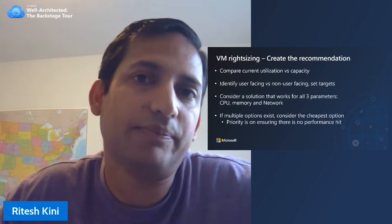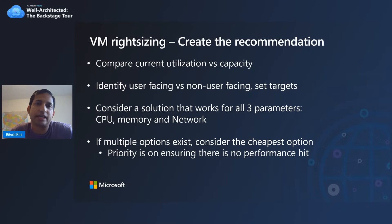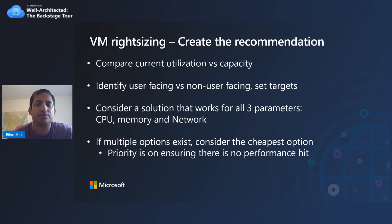Let's look at exactly what happens to derive a recommendation. We first compare current utilization with the capacity of the VM it's currently on. We identify the type of workload — user-facing or non-user-facing — and figure out the appropriate target. Then we look at all the different sizes available in Azure and see which size can get the workload to the right target utilization without going over. Finally, we pick the cheapest option so you get the most cost optimization while keeping performance and reliability intact.